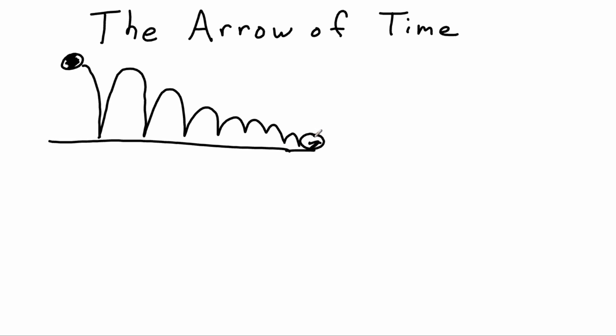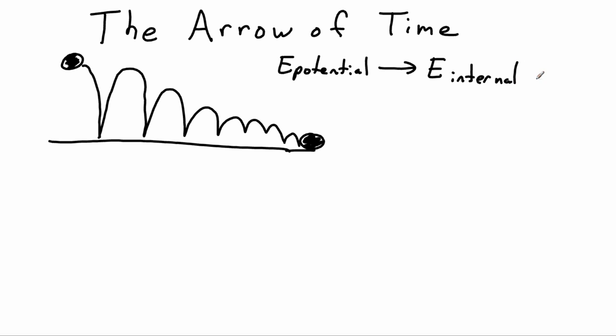We just have a ball sitting on top of the table. We started off with potential energy, and at the end energy wasn't really destroyed — we know that the ball and the table and the room are a little bit warmer than when we started, so we just took potential energy and turned it into internal energy. Internal energy is just the energy of the microscopic motions of the individual atoms and molecules in the table and the tennis ball. So energy was conserved; we just changed what form it was in.